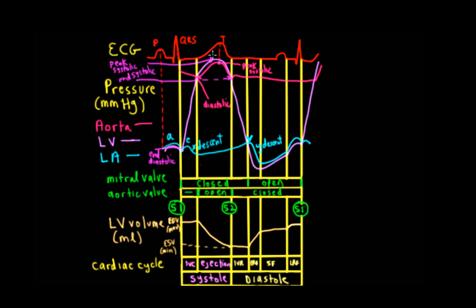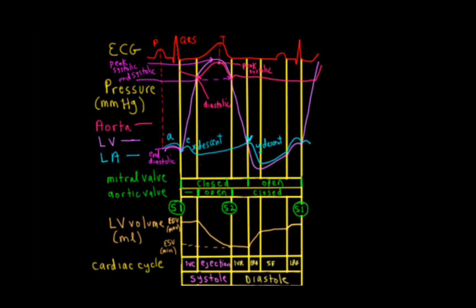The ventricular pressure starts to relax just after the T wave. It's not always at the peak of the T wave, but the T wave begins before that pressure drops.